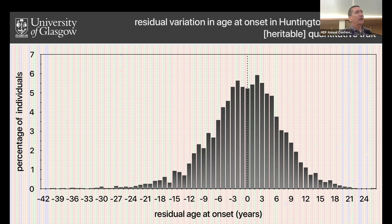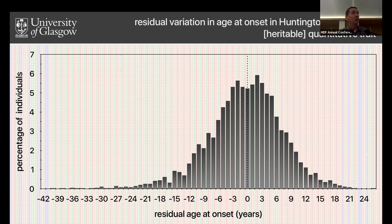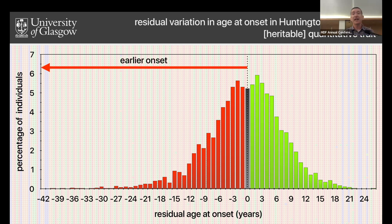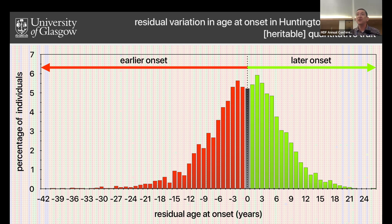The primary resource we take forward is residual variation in age of onset. We use the line that predicts when someone will get symptoms to work out whether they got the symptoms later or earlier than expected, given the number of CAG repeats inherited. That gives us a normal distribution centered around zero — everybody to the left has an earlier onset than expected, and everybody to the right has a later onset than expected. We can use that as a phenotype in a genome-wide association study.